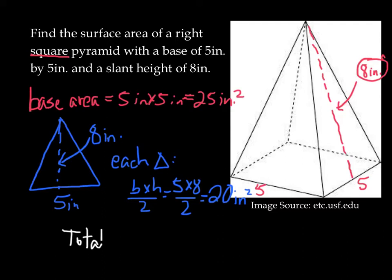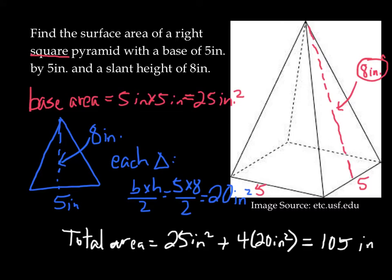We can now answer the question. The total area is my base area, 25 inches squared, plus my lateral area, which is 4 20 inch squared faces. And if we add all that up, we get 105 inches squared.